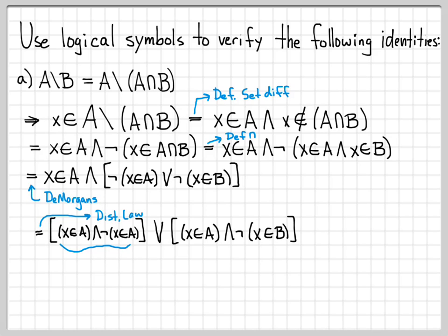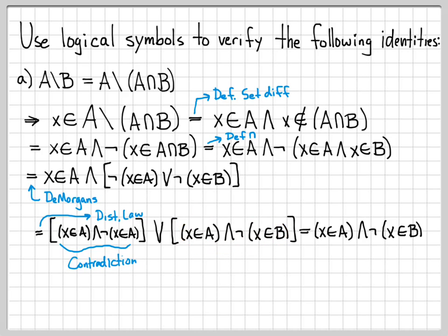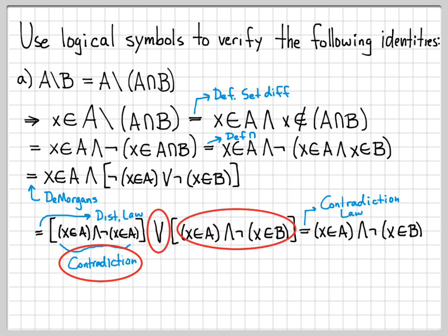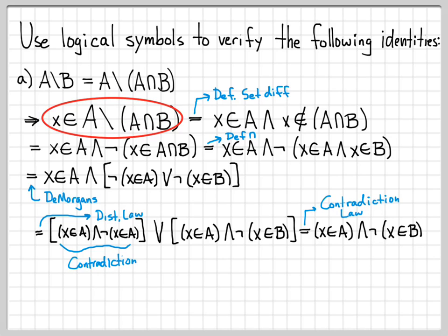If we look at this, what is this statement right here — X in A and NOT X in A? That is always false. I can't be in A and not be in A. So that is what we call a contradiction. Part of my whole logical expression is a contradiction — I have a contradiction OR'd with another statement. We can write that as just the other statement by the contradiction law: any time we have a contradiction OR'd with something, that equals just the something.